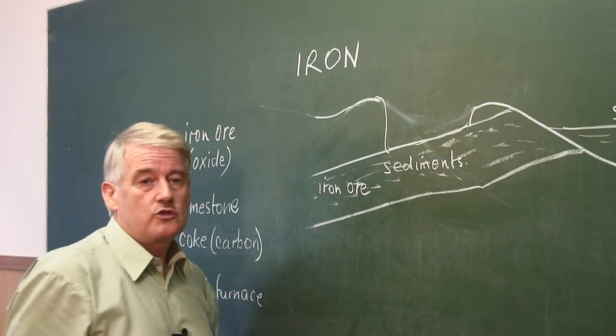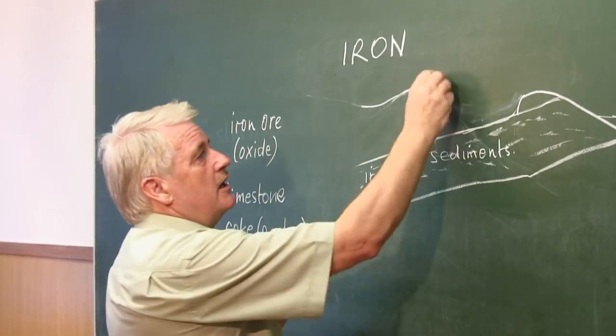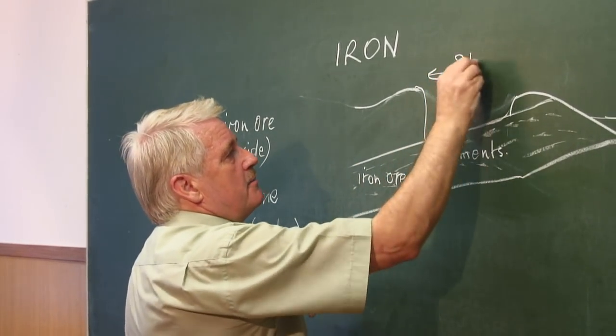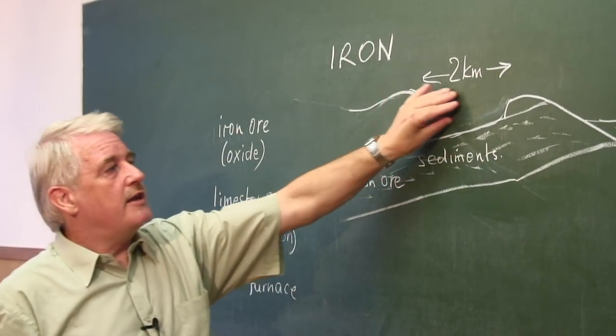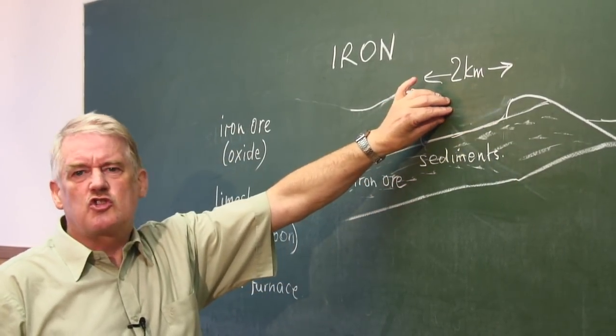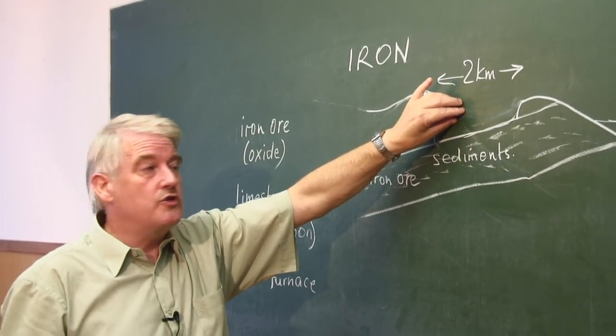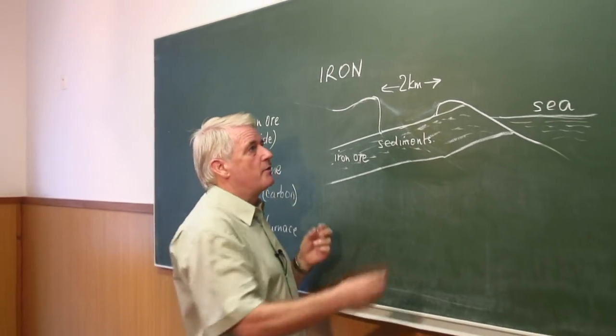maybe one or two or three kilometres long. So here, maybe this is two kilometres. And we dig away the surface, which is soil and rock and other things that we don't want, which we can call the overburden.